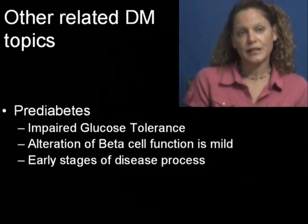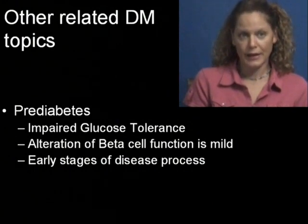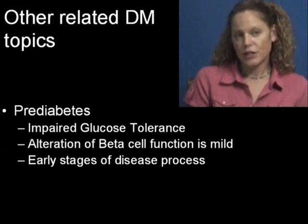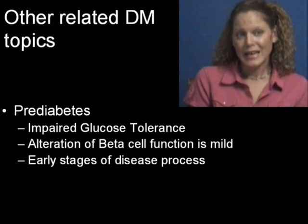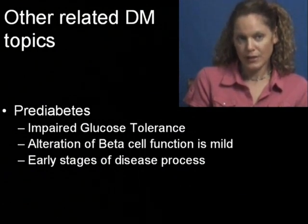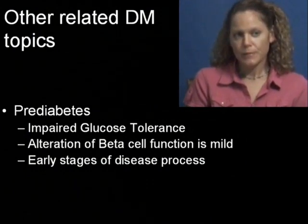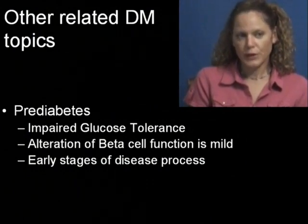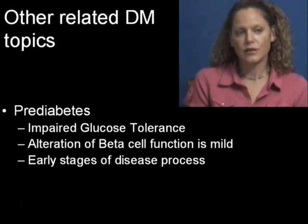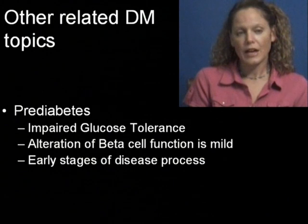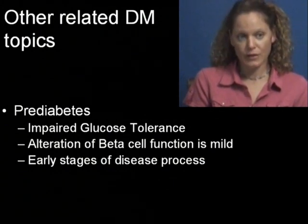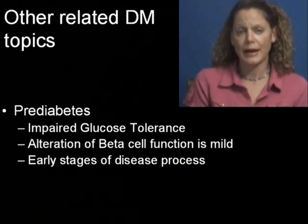Another related topic is prediabetes, which is impaired glucose tolerance. Alteration of beta cell function is mild at this point, and it's the early stages of the disease process. Most patients with prediabetes will try to treat the problem with diet and exercise first, continue to monitor the blood sugars, and use oral hypoglycemics once a diagnosis of diabetes has been made.